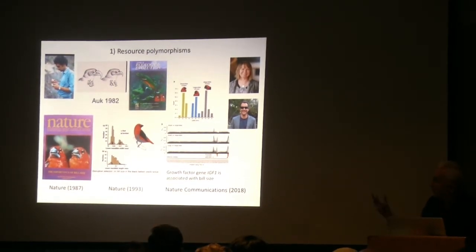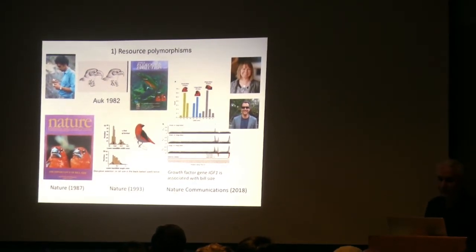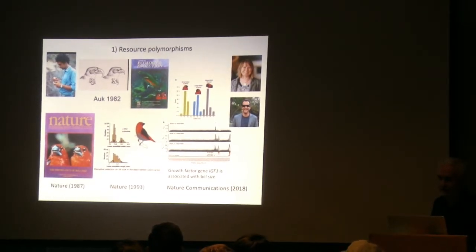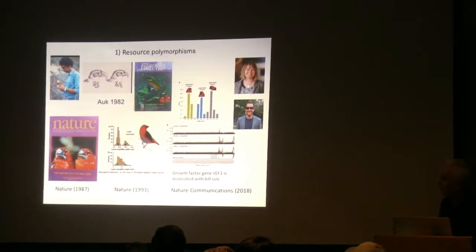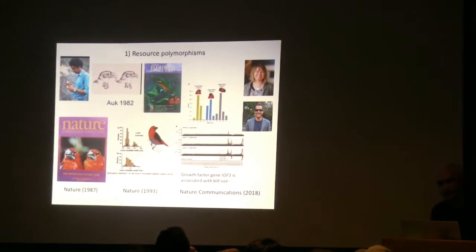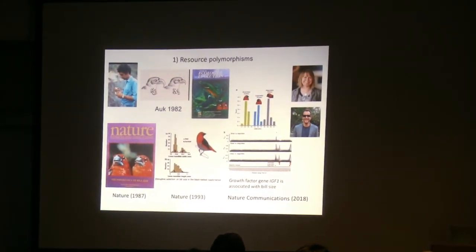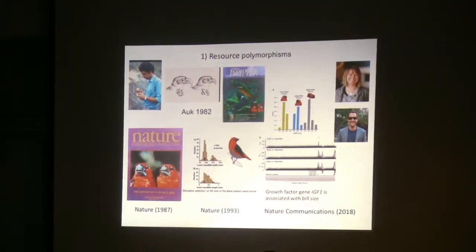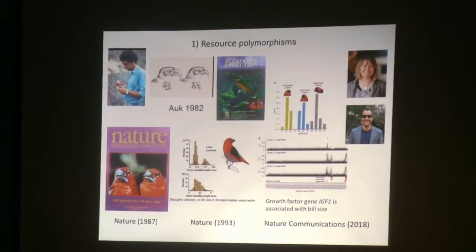This work led eventually into my work on African seed crackers, the finch Pyrenestes. This group has three different morphs that were found to breed randomly with respect to bill size. The differences in bill size were driven by hardness of seeds, and this became essentially a textbook example of disruptive selection. We did breeding experiments — we brought birds back from Africa, bred them in captivity — and the pedigree analysis was consistent with a single gene of large effect.